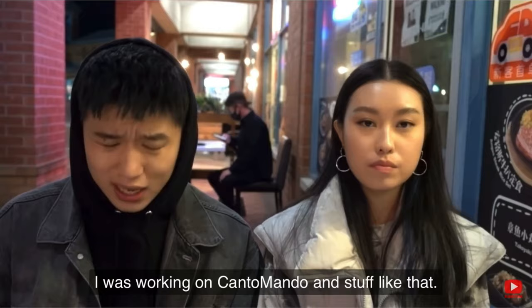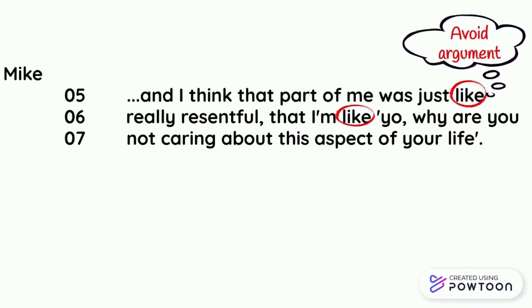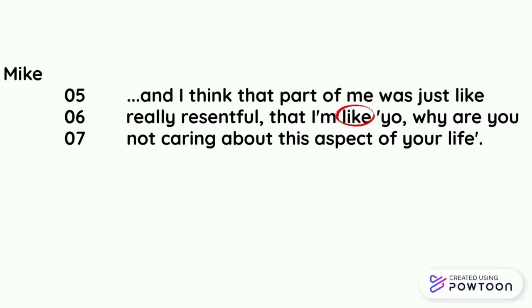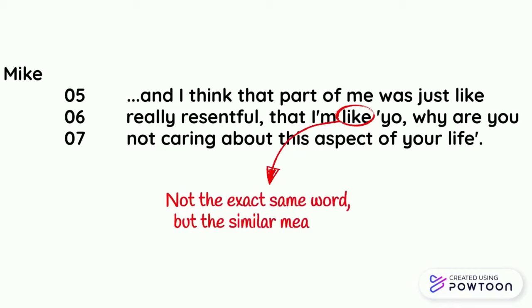The second use is hedging. You can notice that before 'like,' the speaker inserts the adverb 'just' to avoid argument, because the speaker knows the following content may make the listener unhappy. So by using 'like,' the speaker can shield himself. The last use is 'be like' — a quotative marker expression used to introduce speech the speaker said before. Its function gives both speaker and hearer a vivid scene in their minds, and informs the hearer that the quote is not the exact same sentence as the original, but the meaning is similar.